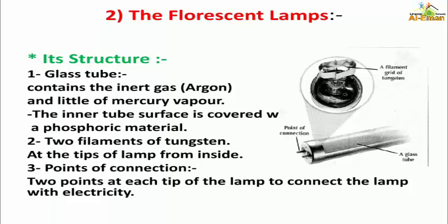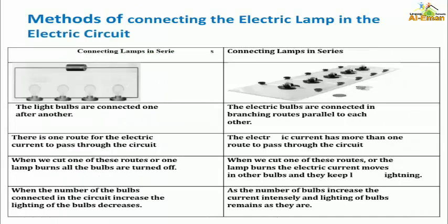So how does this lamp connect to the electric circuit? We have two methods of connecting the electric lamp in the electric circuit. Number one: connecting lamps in series. The light bulbs are connected one after another, and there is one road for the electric current to pass through the circuit.